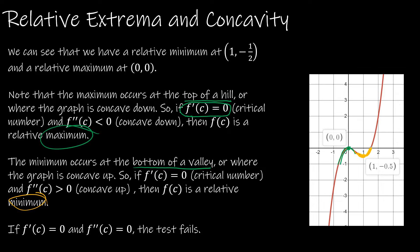Concave up means f''(c) > 0. Now, if you end up with f''(c) = 0, the test fails, and you would have to use the first derivative test. So let's take a look at how we can use this.